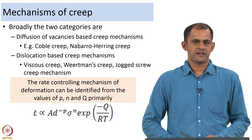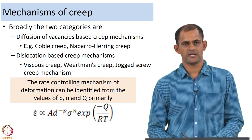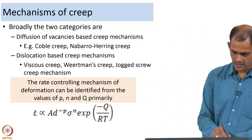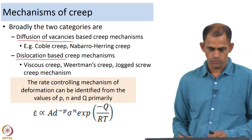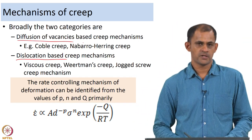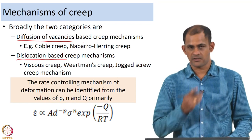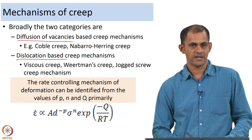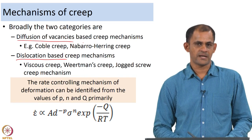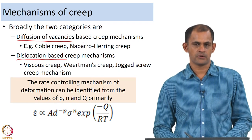Broadly there are 2 categories of creep: creep deformation which is controlled by diffusion of vacancies, or creep deformation which is controlled by dislocation. These are broadly the 2 categories of creep identified till date. When we say diffusion of vacancies, the plastic deformation is controlled by the motion of the vacancies, and the well-known mechanisms under this category are Coble creep and Nabarro-Herring creep.